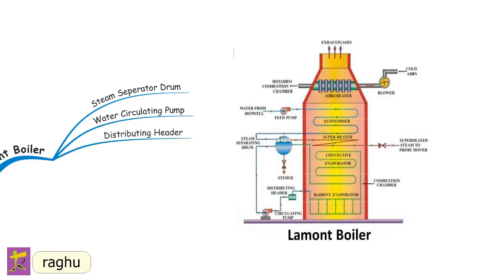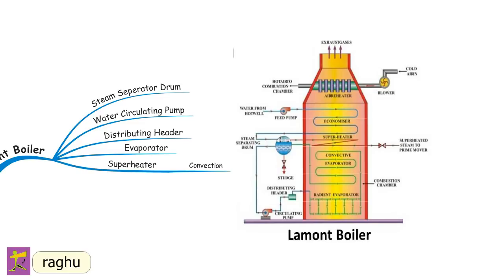The distributing header controls the flow of water to the evaporator tubes. The evaporator is used to evaporate water into steam. The convection superheater addresses the saturated condition of steam produced in the boiler — moisture in steam affects turbine blades and causes corrosion. To avoid this, the superheater is used to increase the temperature of steam and improve efficiency.